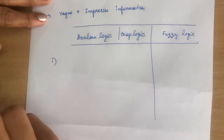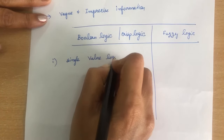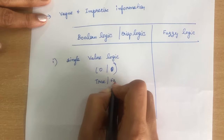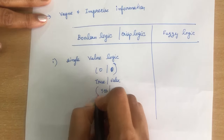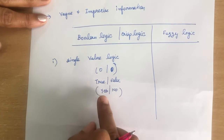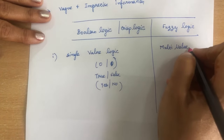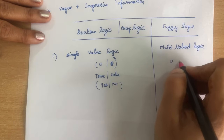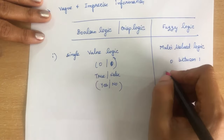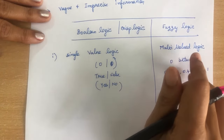The first difference: Boolean logic has only a single value — it can be 0 or 1, true or false, or yes or no. Fuzzy logic is a multi-valued logic. It also has values between 0 and 1, but not just two values. It can be 0, 0.2, 0.4, 0.5, or any value between 0 and 1.